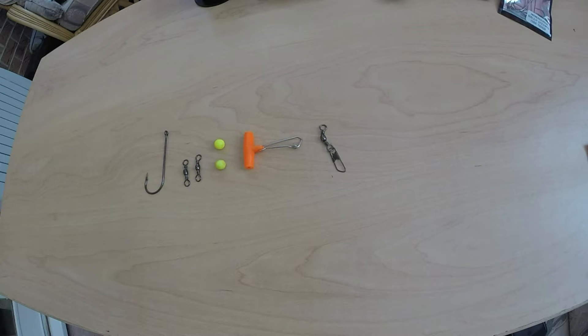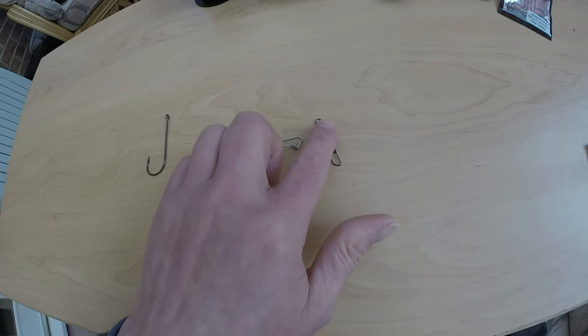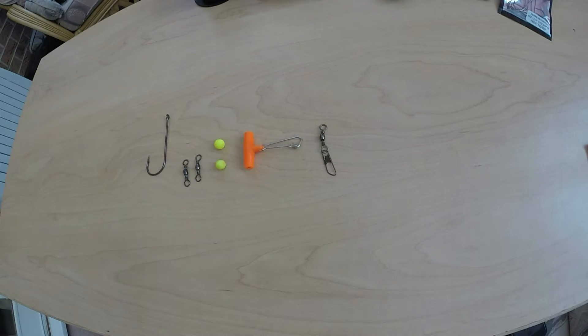I'd like to show you how to create your own sliding ledger rig. All you need is a hook, two swivels, two beads, a sliding boom, and if you haven't got a sliding boom, a snap lock swivel will do the job just as good.